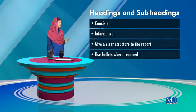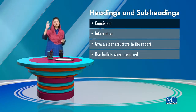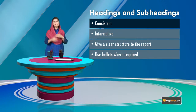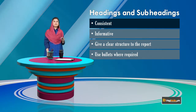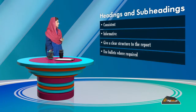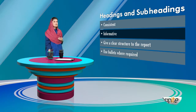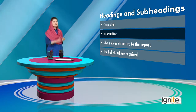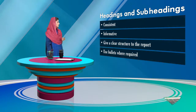Headings and subheadings should be consistent. Font size should be consistent, and whatever numbering you use — for example, 1, then 1.1 below it, or alphabetical — it should be consistent throughout. The words used in headings should give people clear information, adding to the value of the report. It's not just a heading that's there for the sake of it.